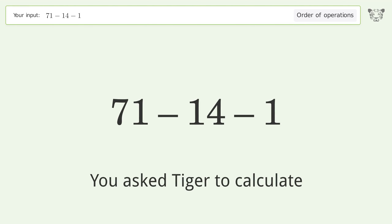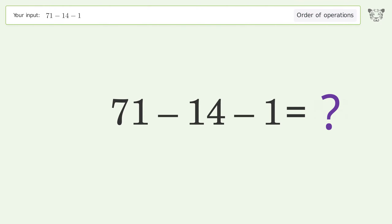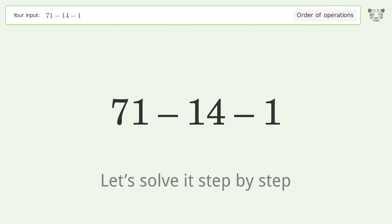You asked Tiger to calculate this. It deals with the order of operations. The final result is 56. Let's solve it step by step.